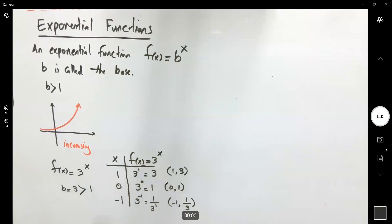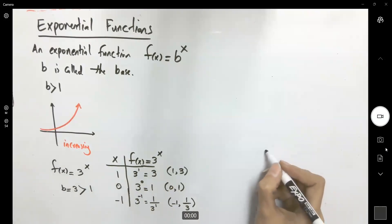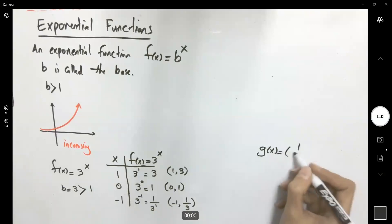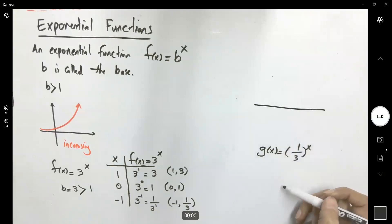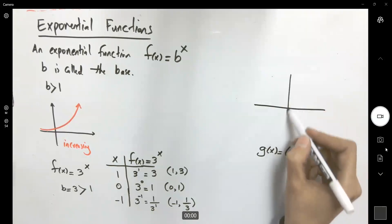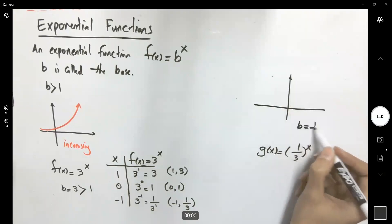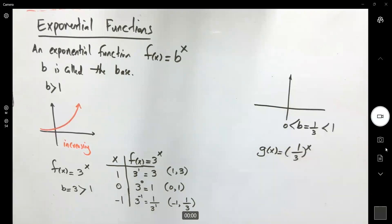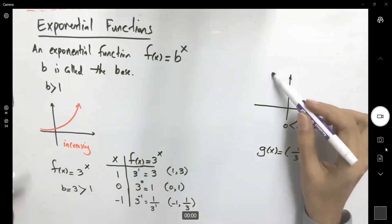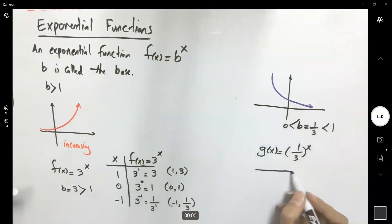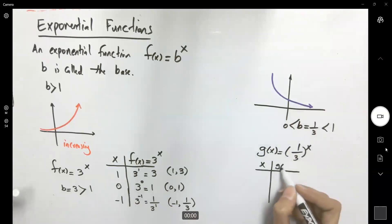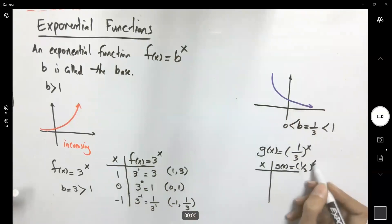Now let's look at the second function, g of x equals one-third to the x. Remember that when the base is between 0 and 1, the general behavior is a decreasing function. We can use a table and expect the graph to be decreasing.